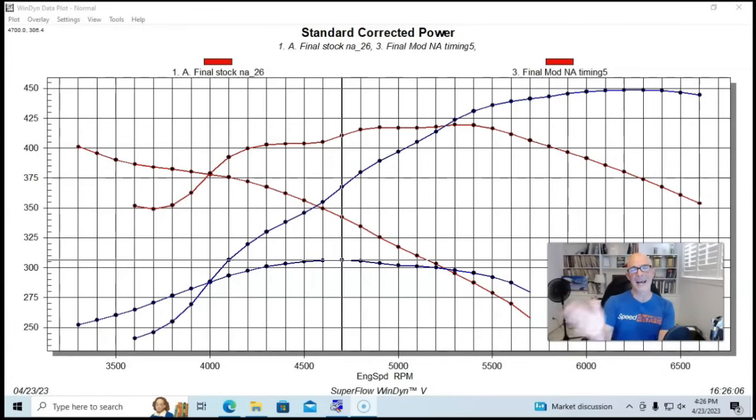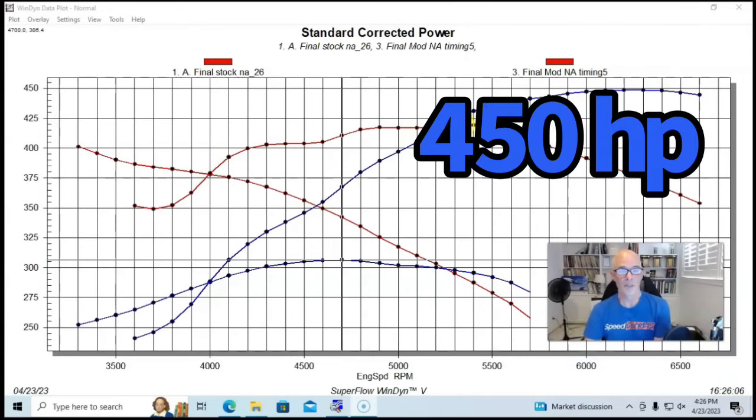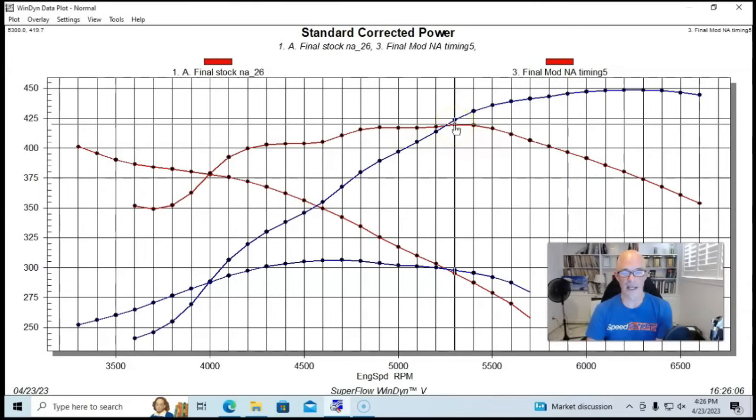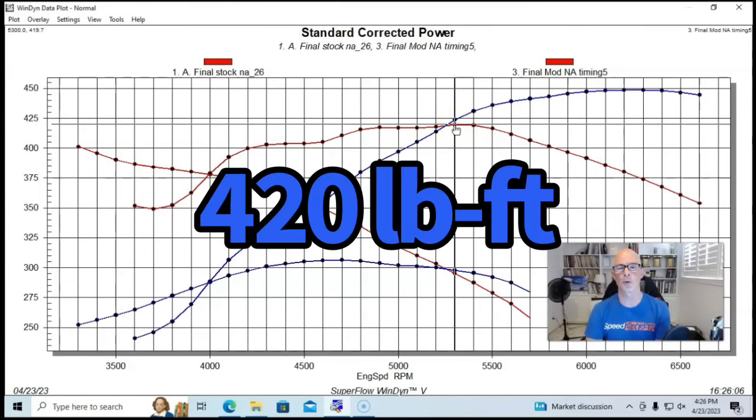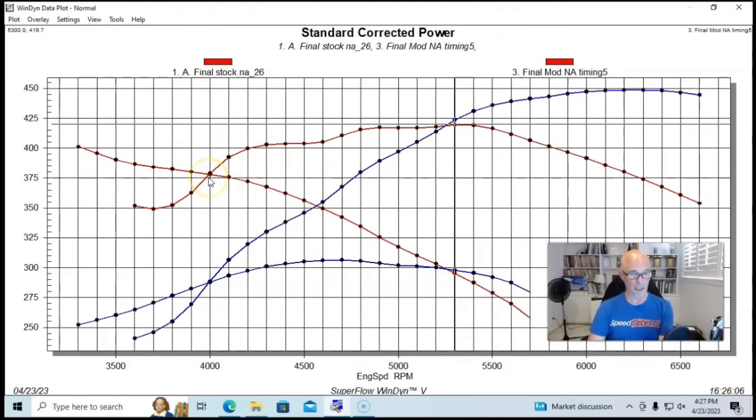But this worked out well. It made 450 horsepower. Peak torque checked in at 419.7 to 420 foot pounds. We did lose some power, as you can see, below 4000 RPM compared to the stock stuff. So all the stock guys that want that sub-4000 RPM torque—that's the way to get it.